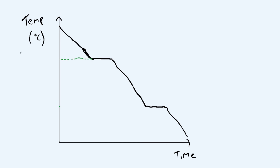On the cooling graph, these temperatures are still called the boiling point and the melting point. Some students ask why it isn't called the condensing point or the freezing point — it's because they are exactly the same thing. The boiling point is the border temperature between gas and liquid, and the melting point is the border temperature between liquid and solid, regardless of which direction you're going.